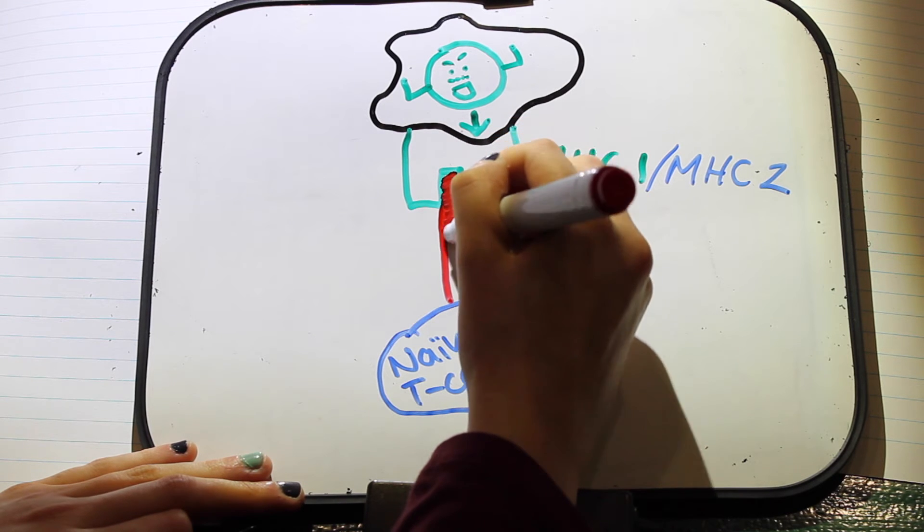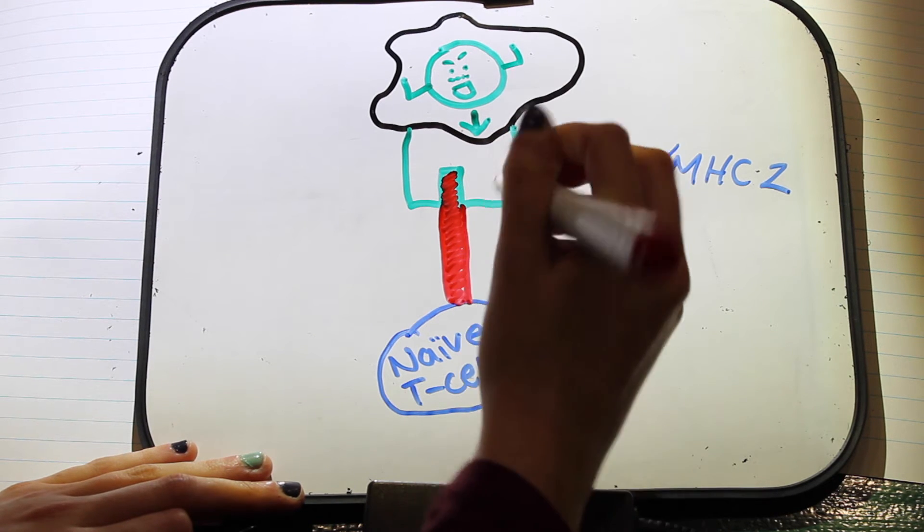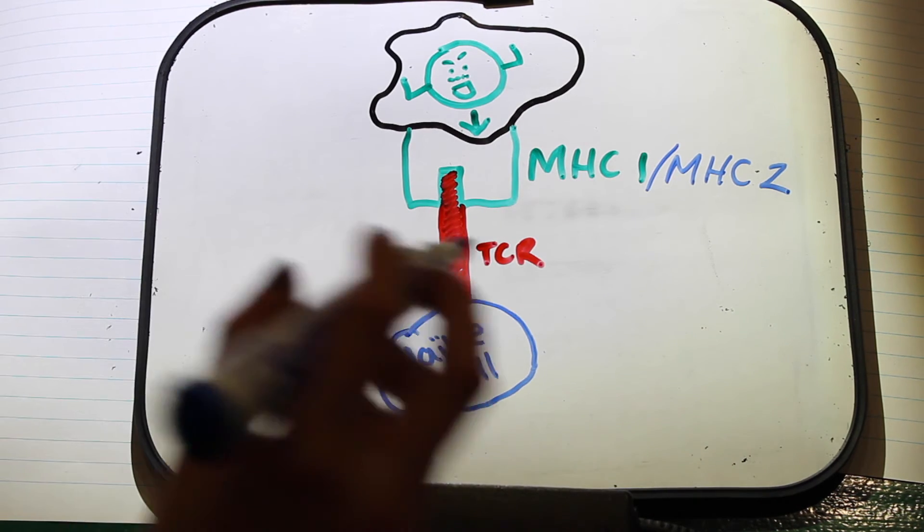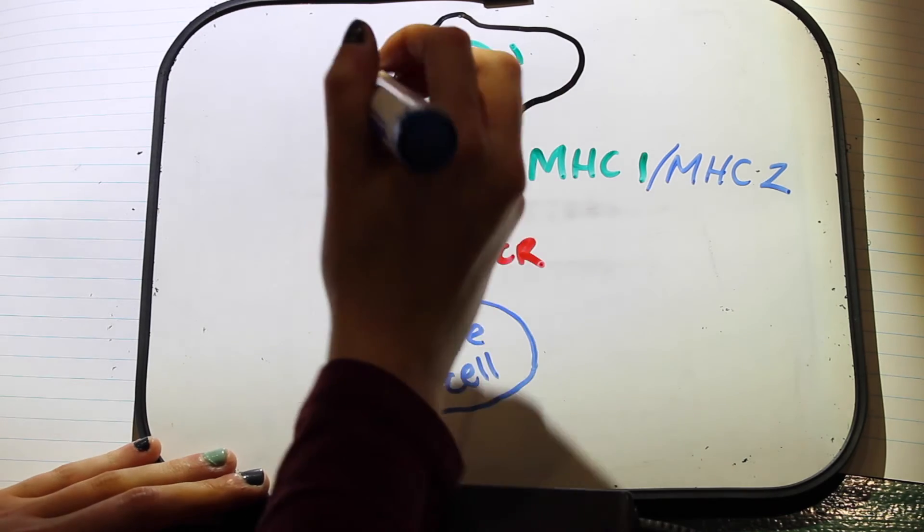There are two necessary interactions between naive T-cells and dendritic cells that must occur for the naive T-cell to become activated. These are T-cell receptor-peptide-MHC interactions and co-stimulatory signaling.